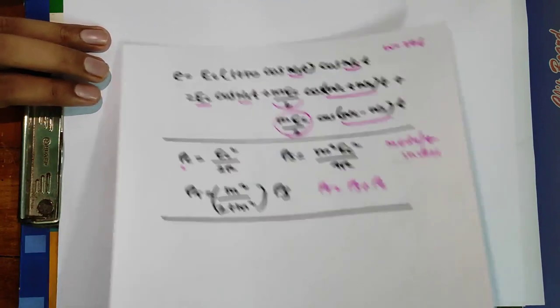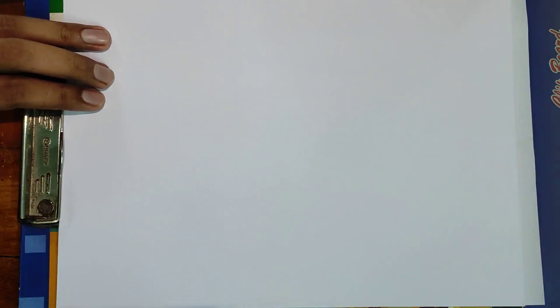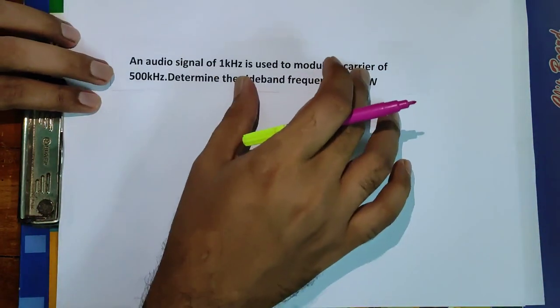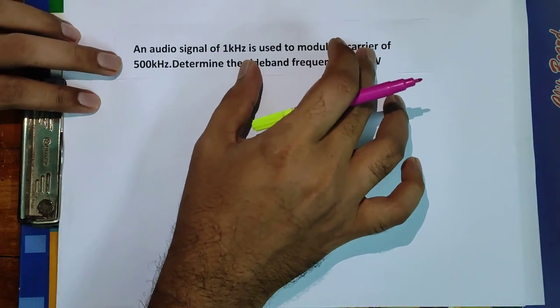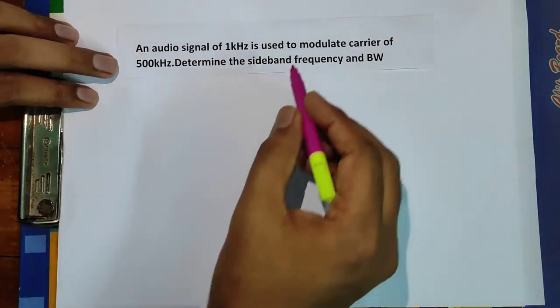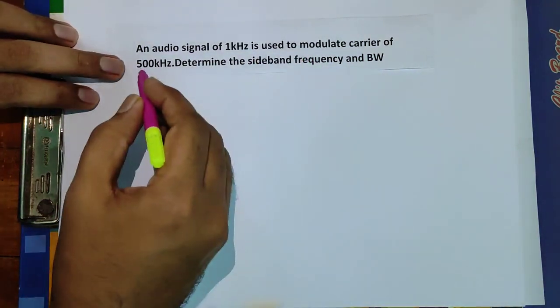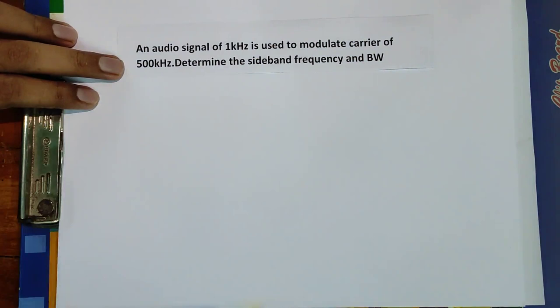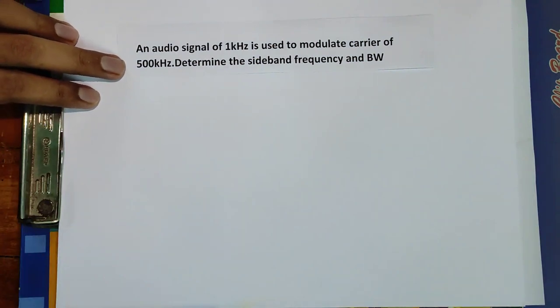Now for the first problem: an audio signal of 1 kHz is used to modulate a carrier of 500 kHz. Determine the sideband frequencies and bandwidth.